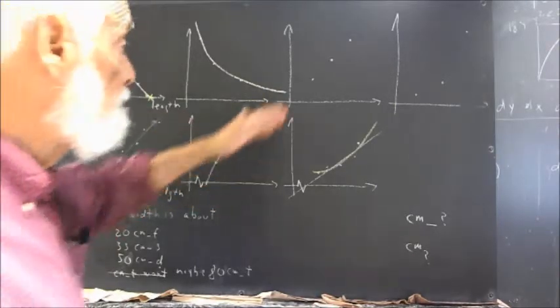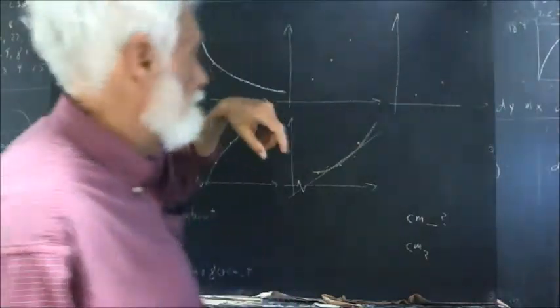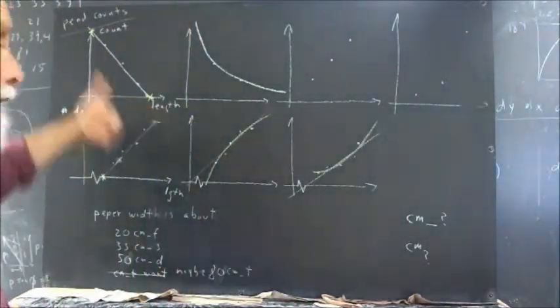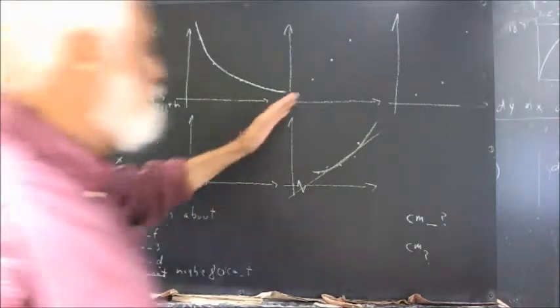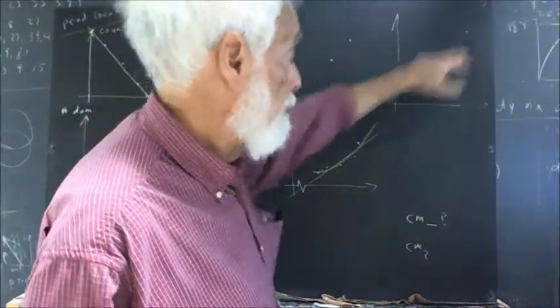Well, people pretty quickly saw that this graph and this graph couldn't because as the length increases, the count decreases. And here, we would have the count increasing as the length increases. And the same here.